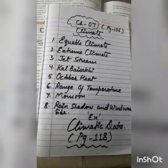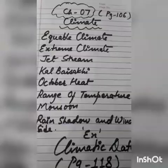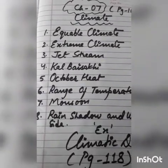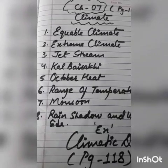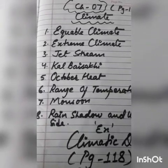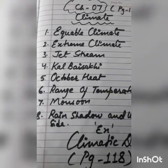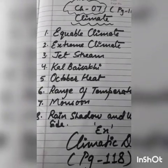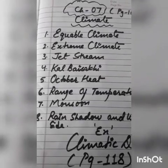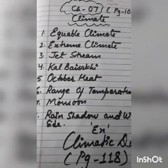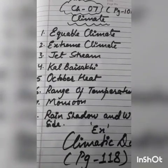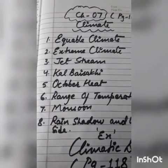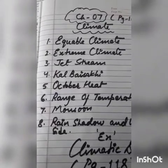Let's start. The first term is equable climate. What is an equable climate? It is one which is neither too hot in summer nor too cold in winter. Can you give examples of this equable climate? Yes — coastal areas, coastal regions.